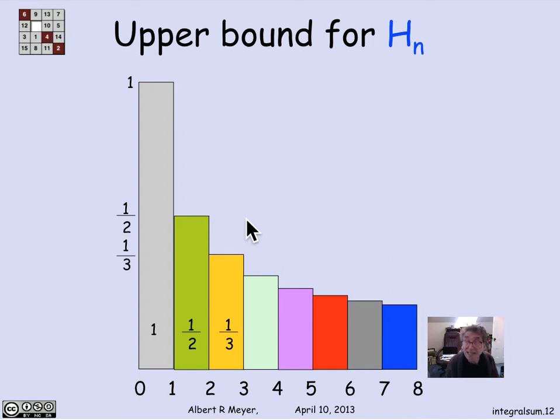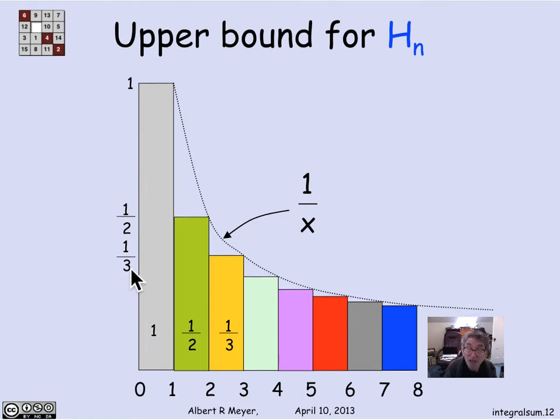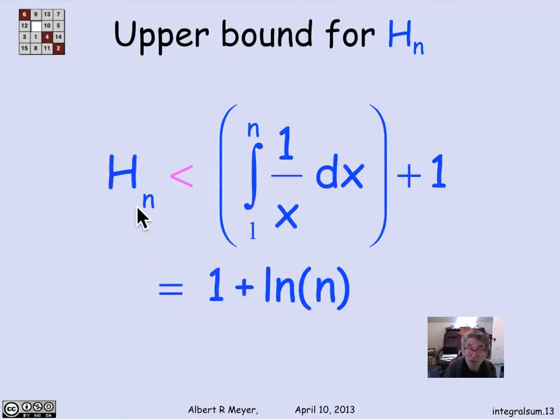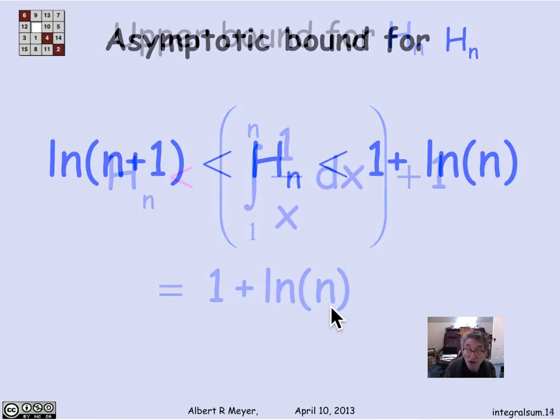So while we're at it, let's get an upper bound for H_n. We just got a lower bound of H_n, but the same kind of logic of using an integral will give you an upper bound for H_n. What I do now is I run a curve from the upper right corners of the rectangles, and that curve is simply 1 over x. So an upper bound for the harmonic number H_n is the area under 1 over x out to n plus this 1. And so I get an upper bound that says that the harmonic number H_n is less than the integral from 1 to n of 1 over x dx plus 1, or it's equal to 1 plus log of n.